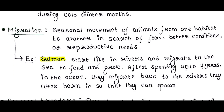Migration is the seasonal movement of animals from one habitat to another in search of food, better conditions, or reproductive needs. For example, salmon start life in rivers and migrate to the sea to feed and grow. After spending up to seven years in the ocean, they migrate back to the rivers where they were born so that they can spawn.